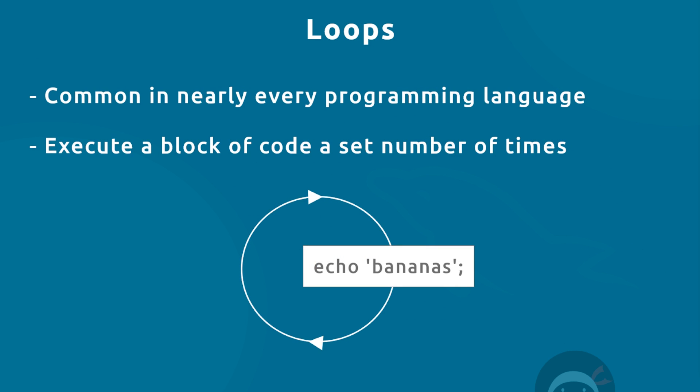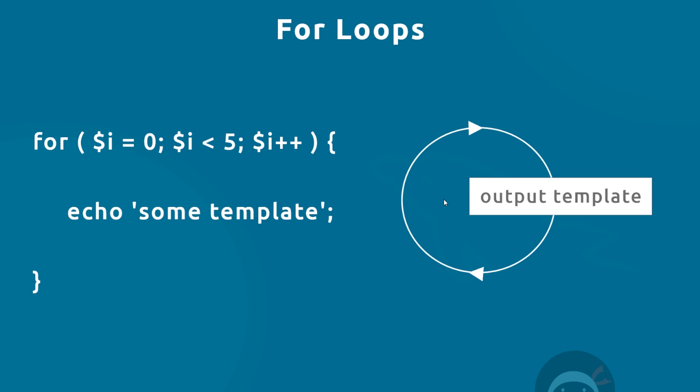Loops are a common theme in pretty much every programming language and they're a way that we can execute a block of code over and over a set number of times. Here's a few examples: imagine we have five blogs and we want to cycle through those blogs and output some kind of template for each one.